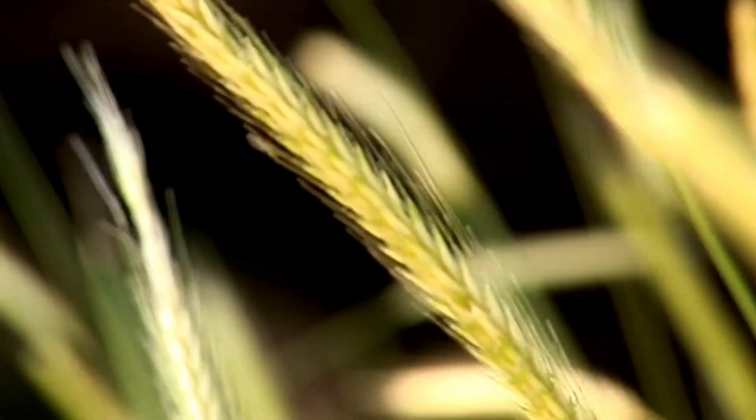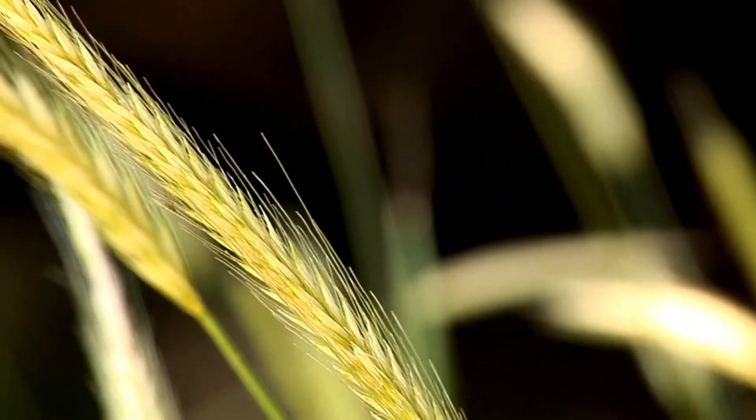Wheat in the field starts to extend its stems in the spring. The stem is still hidden inside the upper leaves, which continue to grow before they sequentially unfurl.